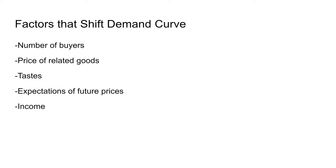Now we talk about factors that shift the demand curve: number of buyers, price of related goods, tastes, expectations of future prices, and income — all shift the demand curve left or right. The first one, number of buyers, is easier to understand: the more buyers you have, the more demand you will have. So as the number of buyers increases, your demand curve will shift to the right.